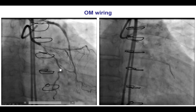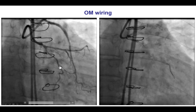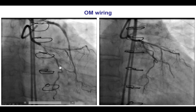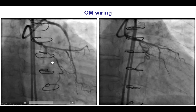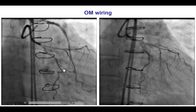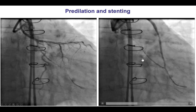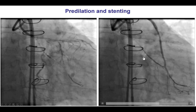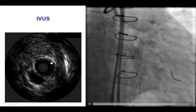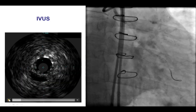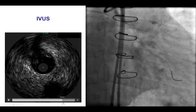This is an example where this initially appeared to be a CTO of the obtuse marginal branch. However, with dual injection, this is not a CTO but actually a non-occlusive lesion that was easily wired with a workhorse guide wire. We did a pre-dilation, placed a stent, and performed IVUS to check for expansion — and there was good stent expansion throughout that segment.